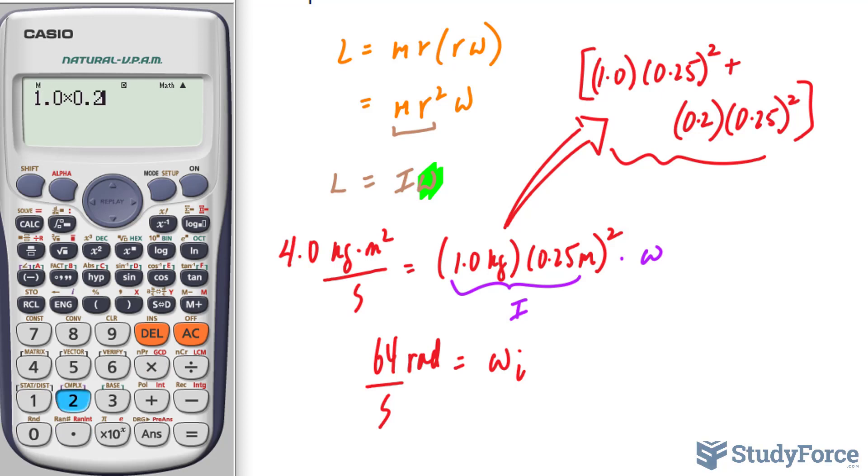So 1.0 times 0.25 raised to the power of 2, plus 0.2 times 0.25 raised to the power of 2. And that's our answer for the right side. And then we divide both sides of the equation by what we just found. So 4.0 divided by what we just found...